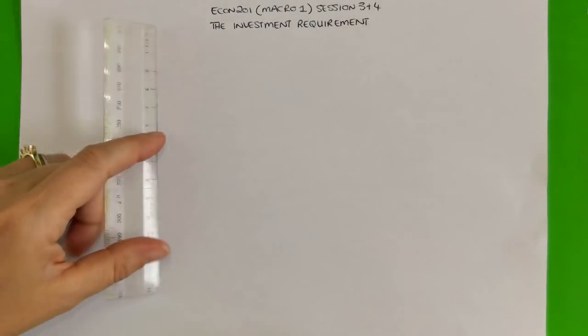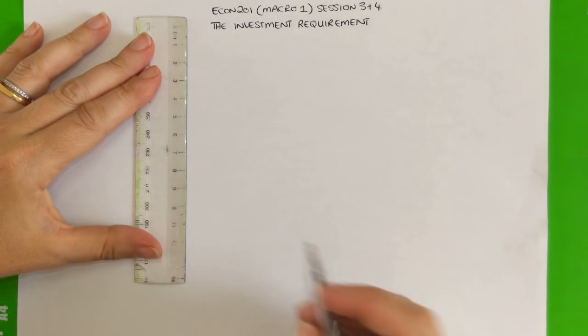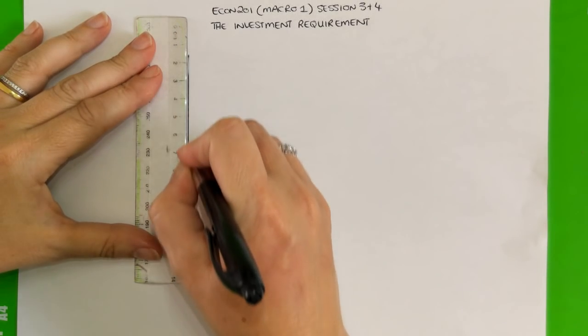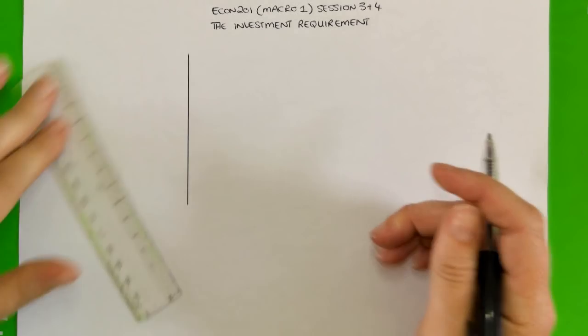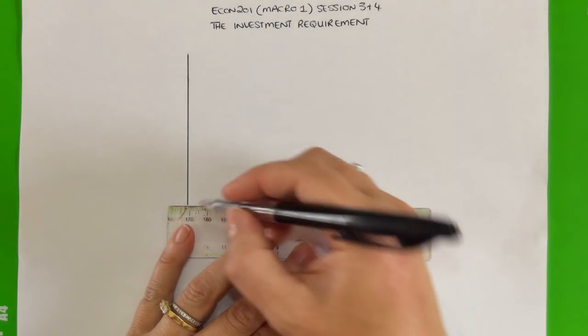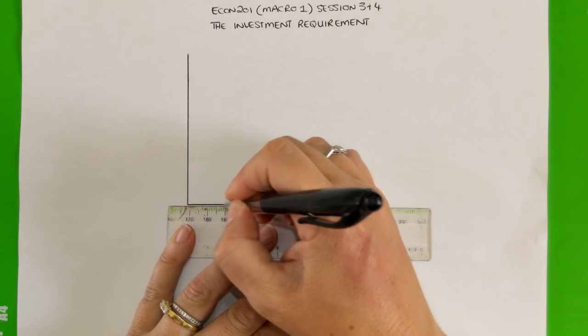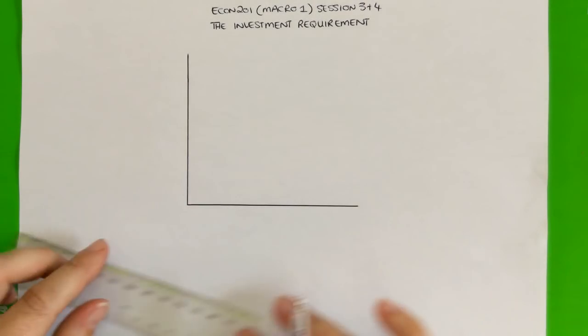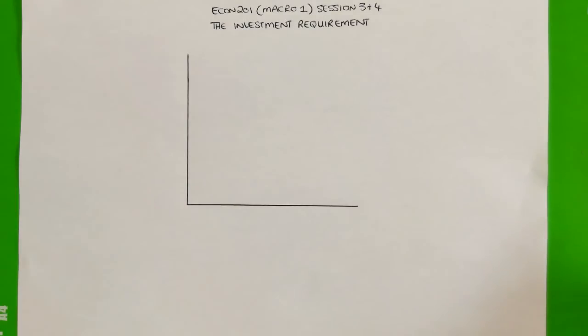Previously, we were speaking about the production function. The second very important part of the model is something called the investment requirement. I'm going to start simply by showing you what it looks like before going into a more detailed explanation. We're going to be using the same set of axes that we did for the production function, because ultimately the curves are all going to end up on the same graph in order to show the complete model.